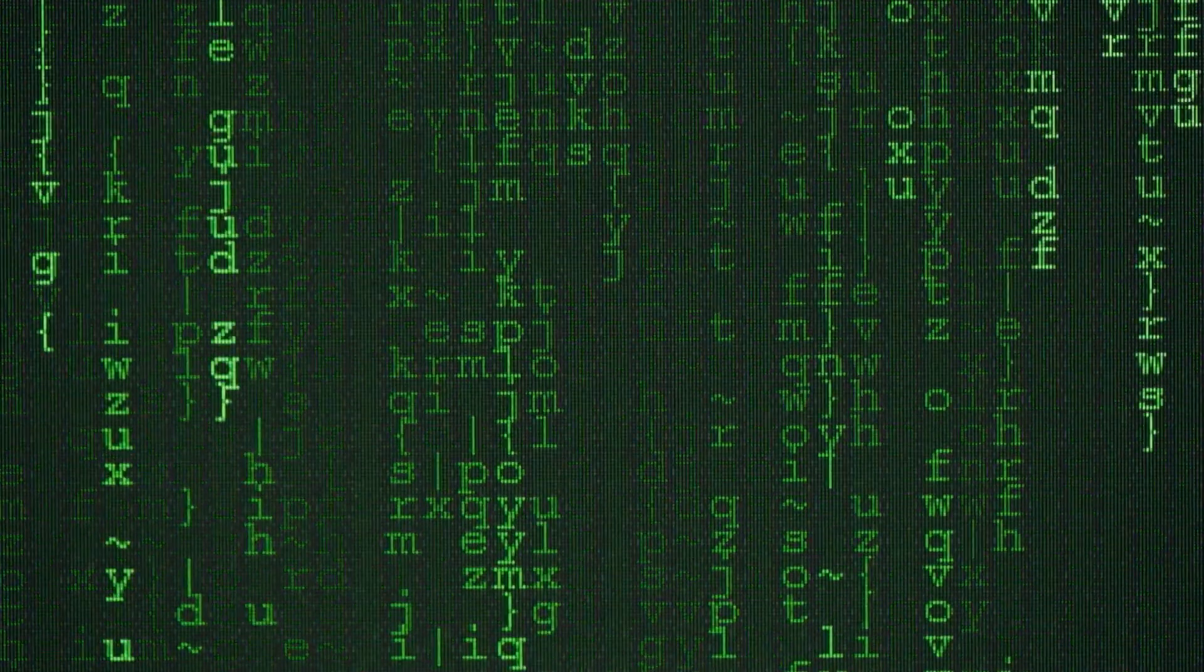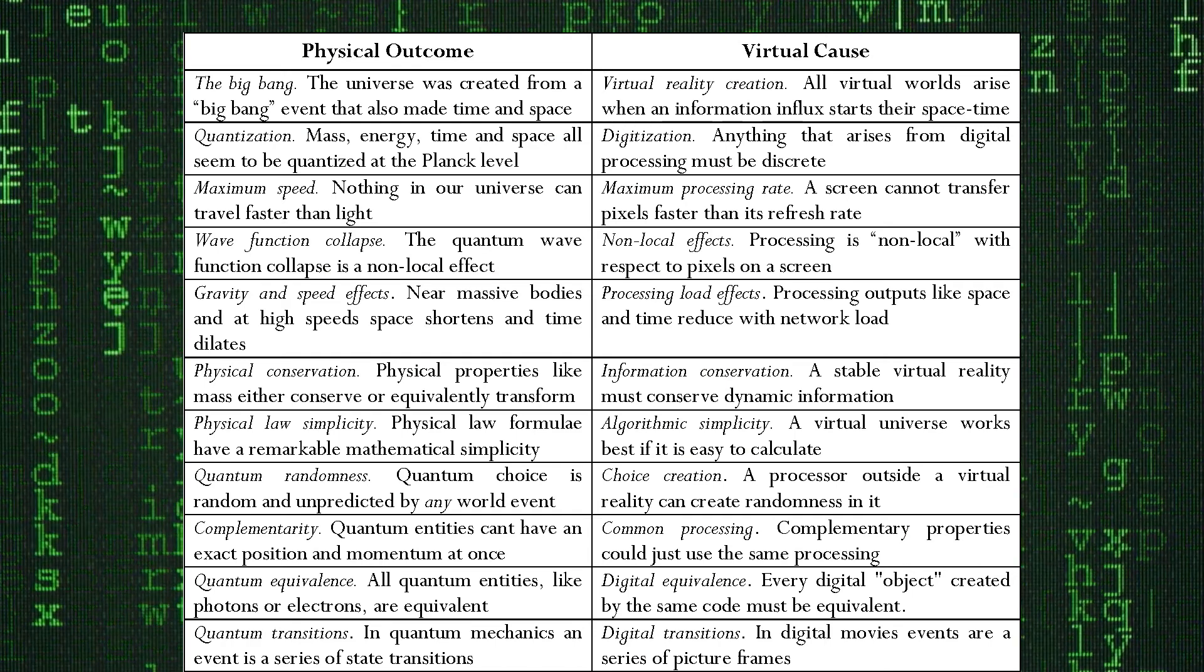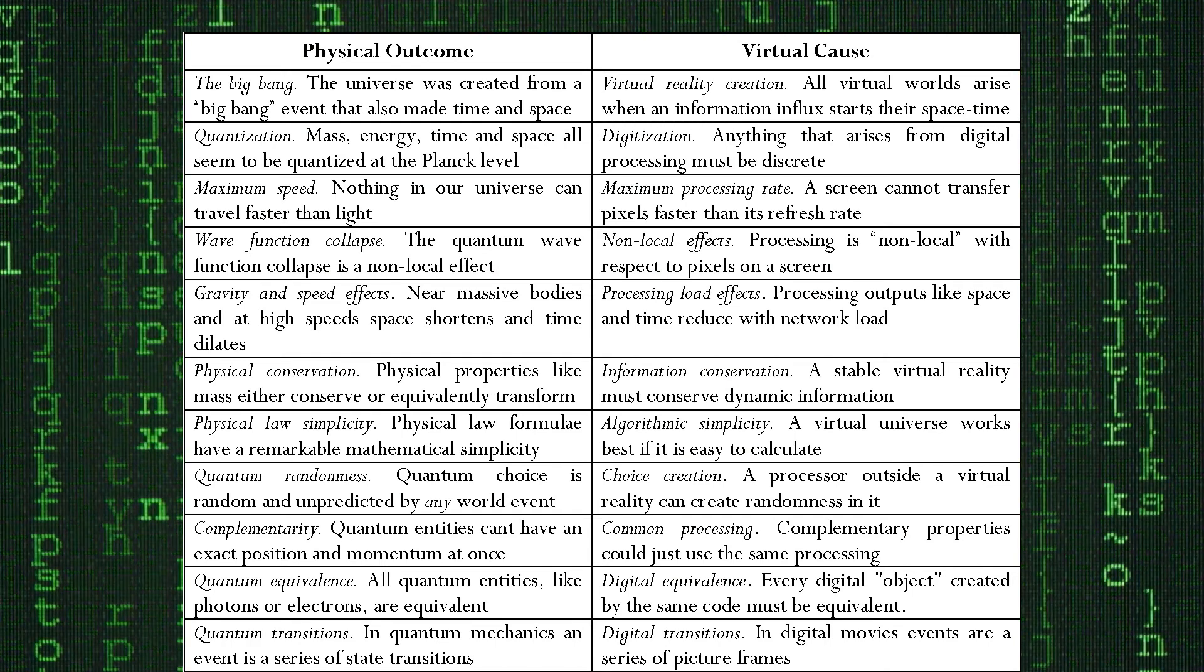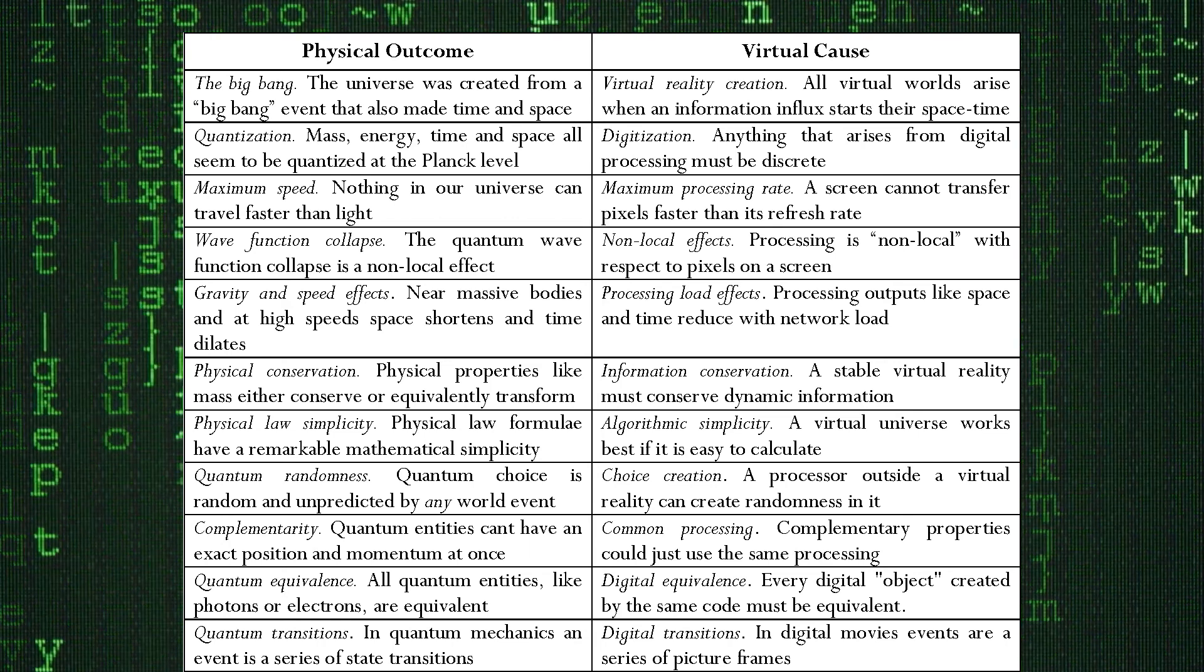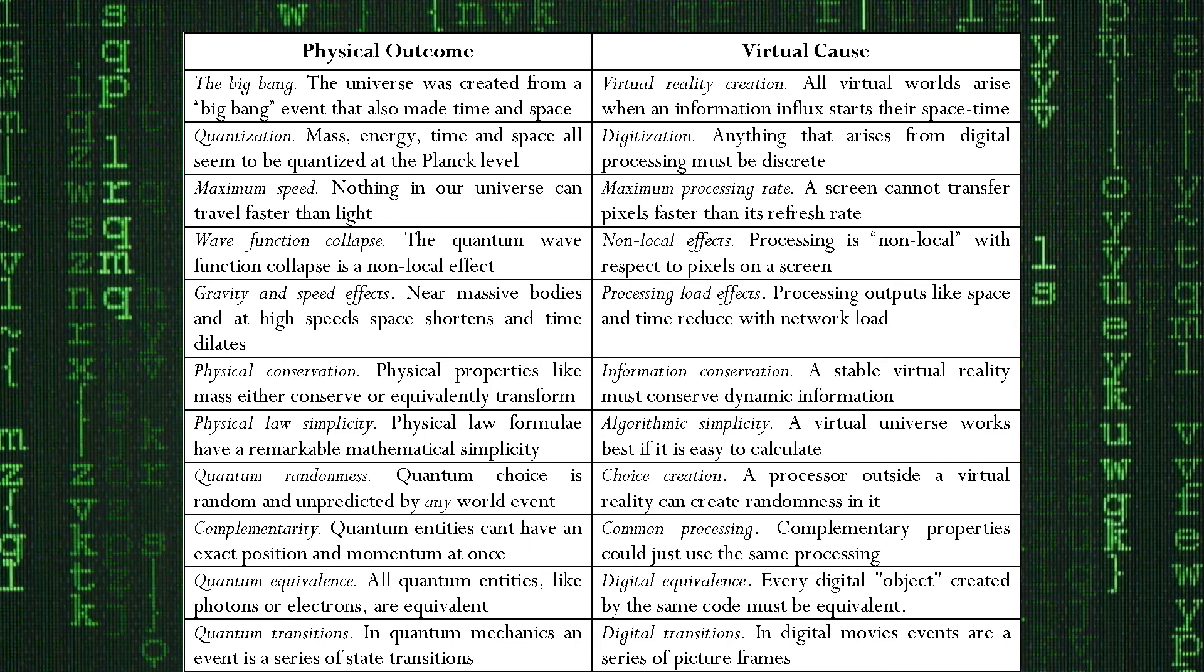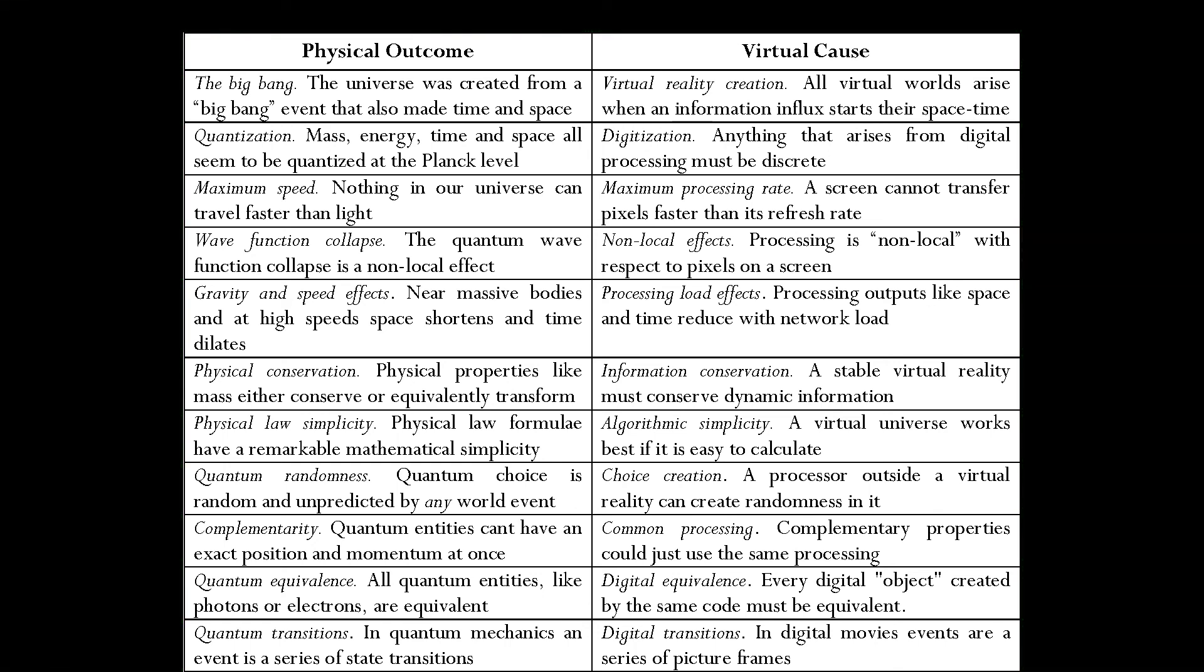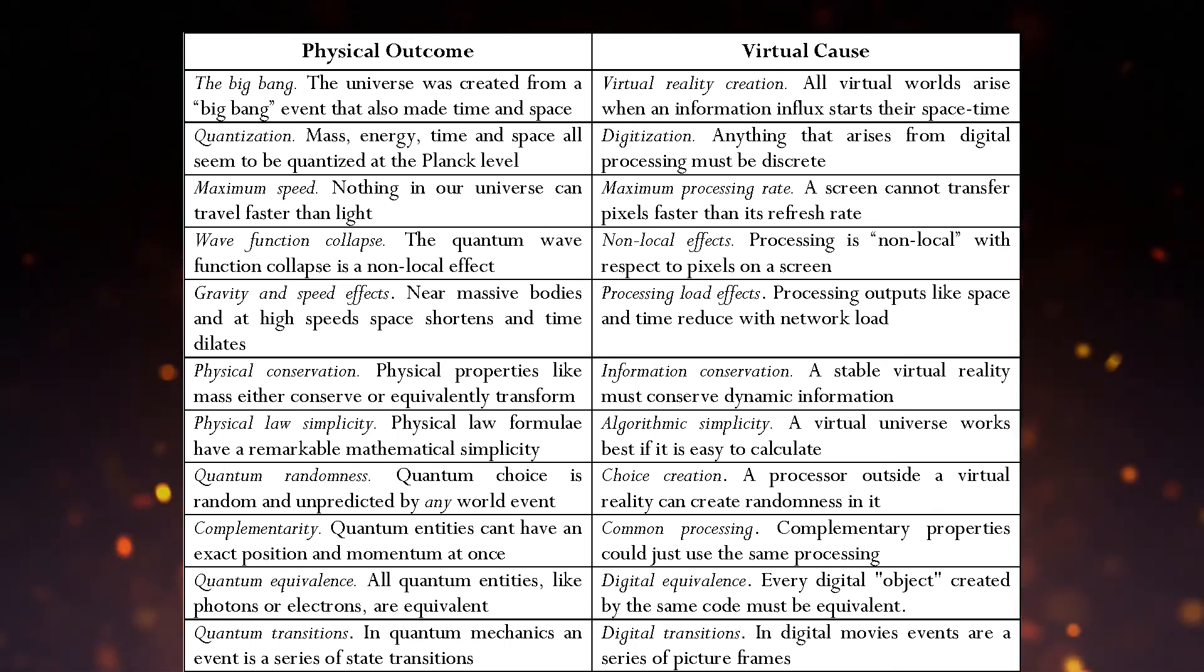Adding onto this, Brian Whitworth looked at things in our universe and compared them to what we would expect in a virtual or emergent world. He found there are 11 key features to the universe that are better explained by the idea that we are in a virtual or emergent reality, rather than a reality with fundamental space-time and matter. Things in our universe like the maximum speed, quantum tunneling, and wave function collapse all make sense in an emergent reality, rather than a fundamental reality. So, this would only add on to the evidence we already discussed.